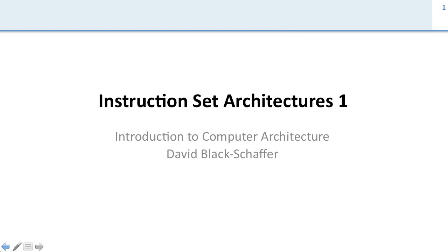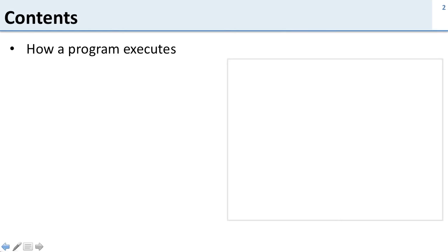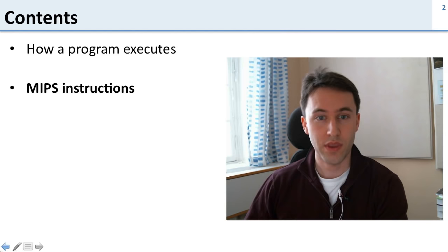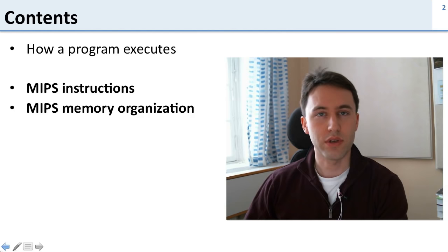In this lecture we're going to talk about the instruction set architecture for the MIPS processors. We're going to be covering the MIPS processor and now we're going to introduce the instructions that the processor uses at the low level and explain how they work. We'll start by reviewing how a program executes, covering how programs are compiled and how instructions are used in the processor, then talk in more detail about MIPS instructions in particular.